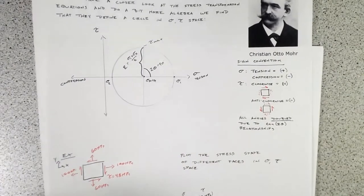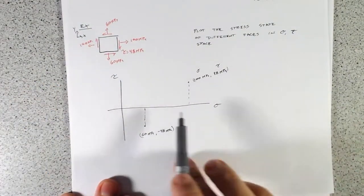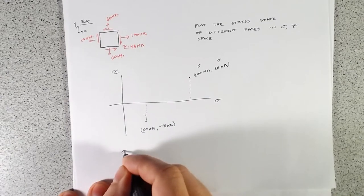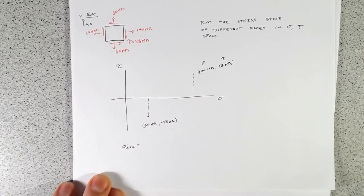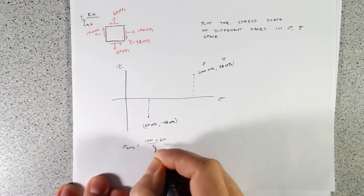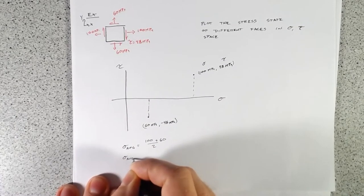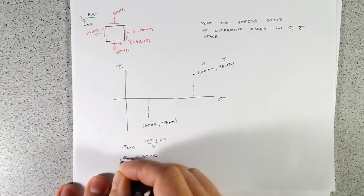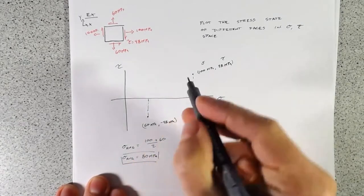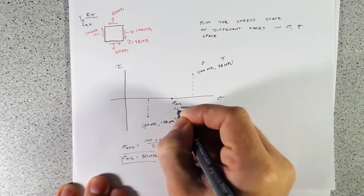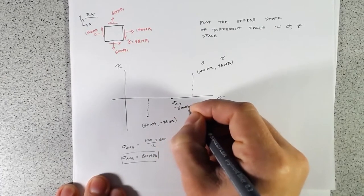In order to get the circle, we need to find the center. We saw that the center of the circle is at sigma average. To find that, let's just take the average between the two sigmas: sigma average equals (100 + 60) divided by 2, which equals 80 MPa.